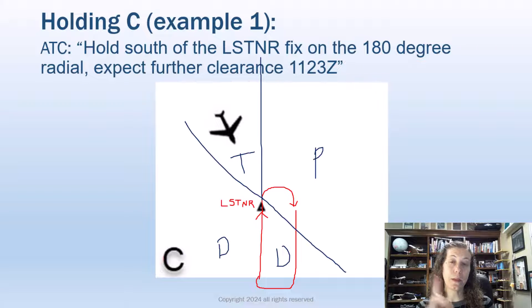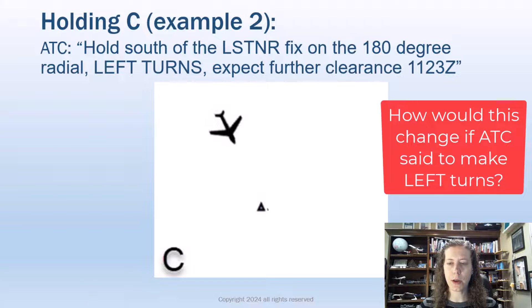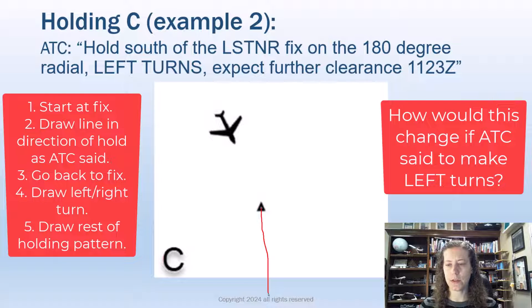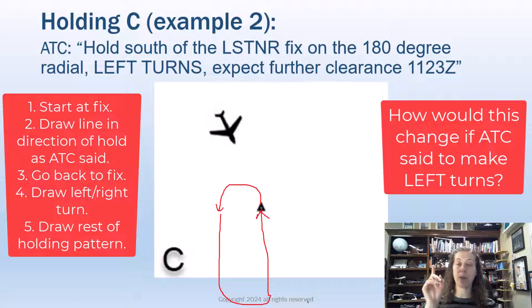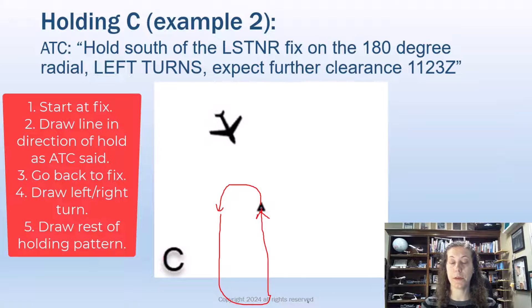Now I want to do one more example about that, so we can talk about, what if the holding pattern in the same example, except I'm going to change one thing: we're going to make left turns. I got to redraw my holding pattern. All right, so we're holding south, so I go to the fix. I draw a line going south. I'm going to make left turn, so I go to the fix and make a left turn like that. I can make the rest of my holding pattern. So here is my example holding pattern, left turns.